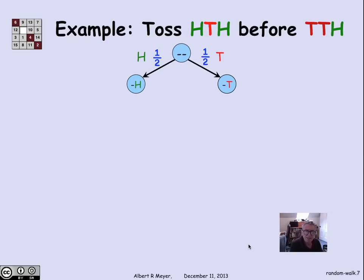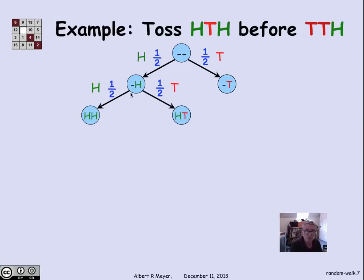So continuing in this way, let's expand more of the diagram. Suppose that I have tossed a head, and then after that, I toss a head, and I go to state HH, or I toss a T, and I go to state HT. So here I'm just recording the previous two flips with the most recent one on the right.